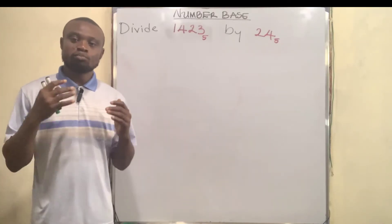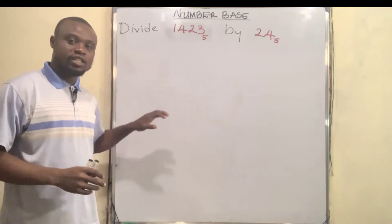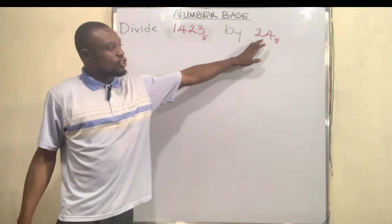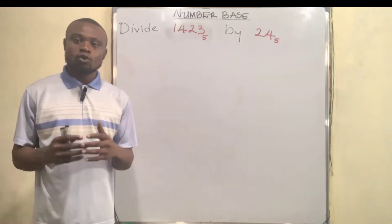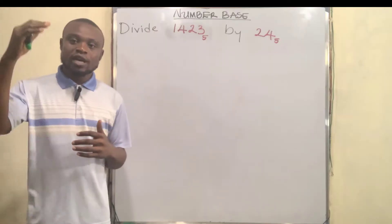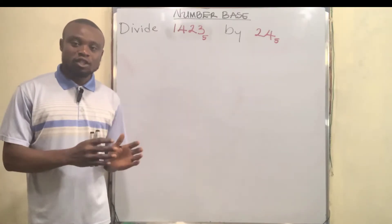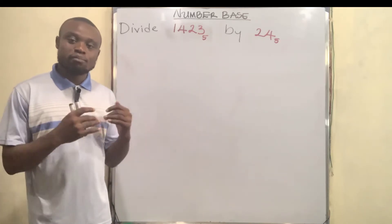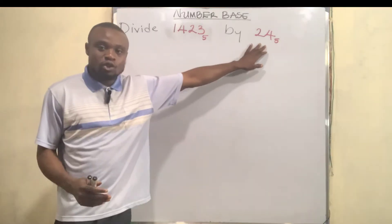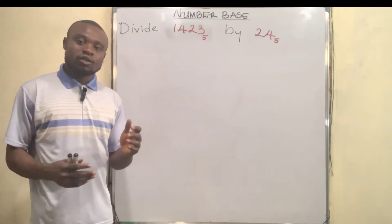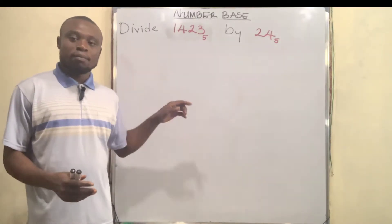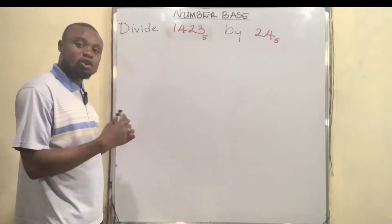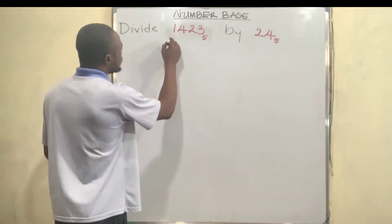Hello, my viewers. Today I'll be explaining the division process in number base, particularly with this example on the board: divide 1423 base 5 by 24 base 5. There are two methods to doing this. The first method is by long division and the second method is by conversion. I'm going to start with the long division method and after that I'll do the conversion method.